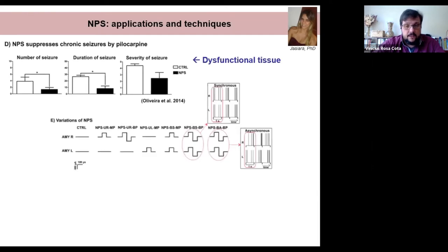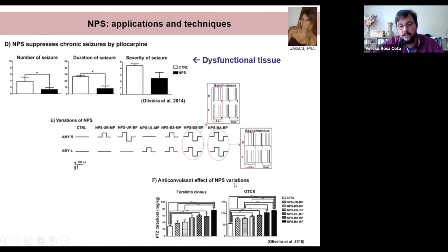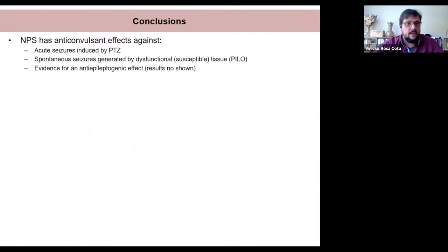We also perfected the stimulation pattern. We tried monophasic, biphasic morphology of pulses, unilateral, bilateral, and also synchronous or asynchronous forms, considering both hemispheres. What we found is that when we go from left to right in this panel, we increase the anticonvulsive pattern of NPS stimulation. It's most anticonvulsive when applied bilaterally, biphasic, and asynchronously. So we were able to increase the anticonvulsive power of our stimulation. Just to sum up what we've seen so far, NPS has anticonvulsive effects against acute seizures induced by PTZ, also spontaneous seizures in the pilocarpine model. We have evidence for an anti-epileptogenic effect. It's most efficacious when applied bilaterally and asynchronously.